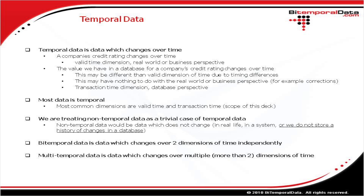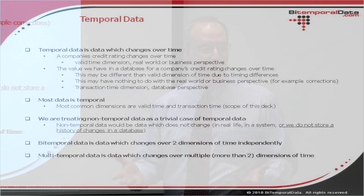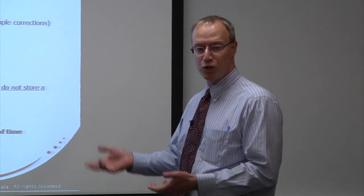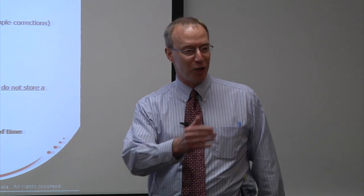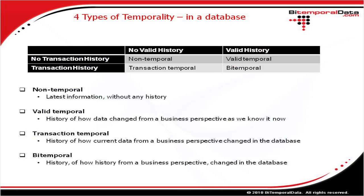Bitemporal data is when data changes over two dimensions of time independently. There are also other concepts of multi-dimensional data changing over more than two dimensions of time, but that's for advanced topics. So this lays out four types of temporality in a database: non-temporal data has no valid history and no transaction history; bitemporal data has both the valid history and the transaction history; transaction temporal data just has the transaction history; and valid temporal just has the valid history.